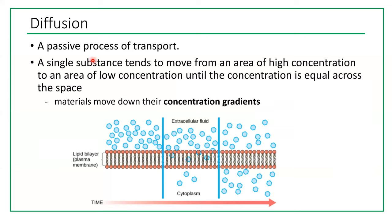Diffusion is a passive transport process where a substance tends to move from an area of high concentration to an area of low concentration until the concentration is equal across the space — materials move down their concentration gradient. If the plasma membrane is permeable, substances have this tendency to move down their concentration gradient from high to low concentration until they reach equal concentration on both sides, or equilibrium.